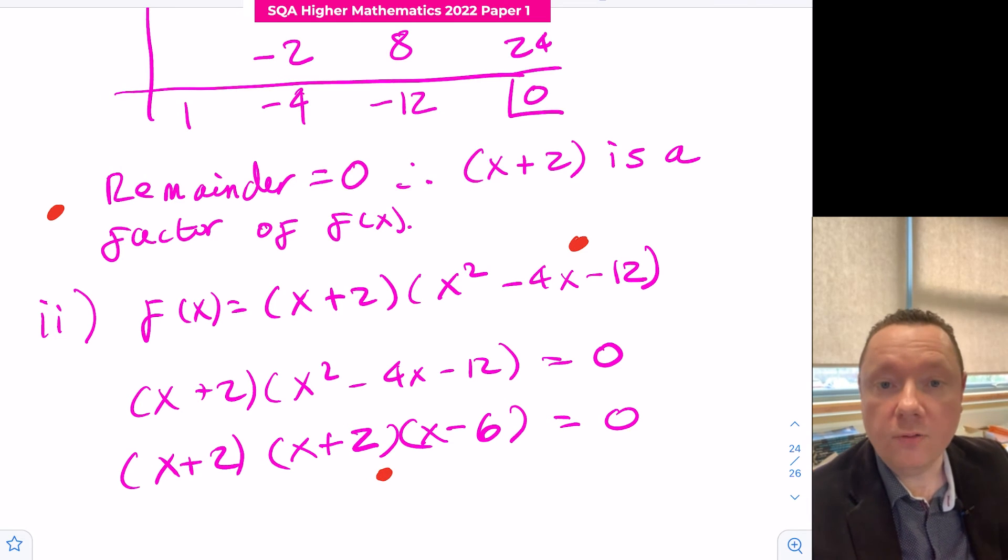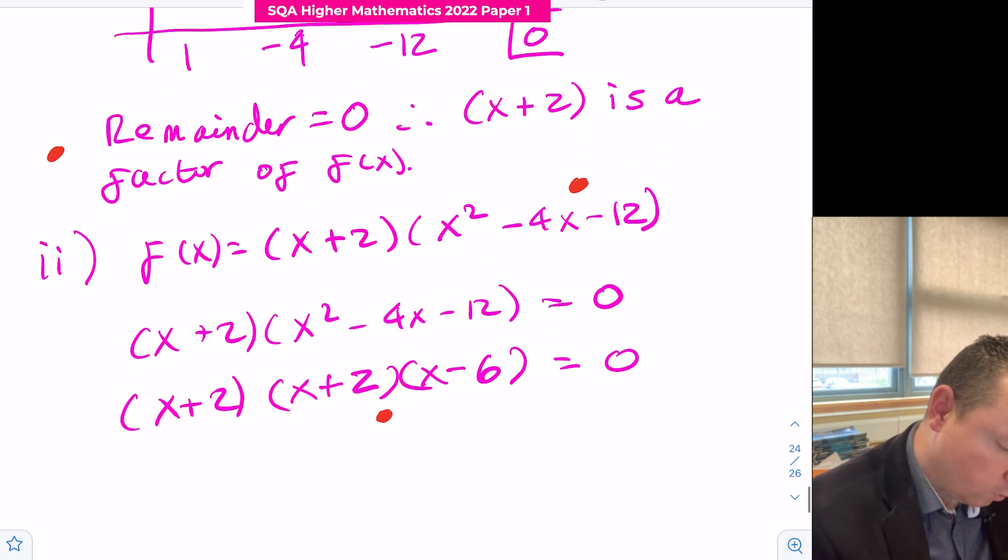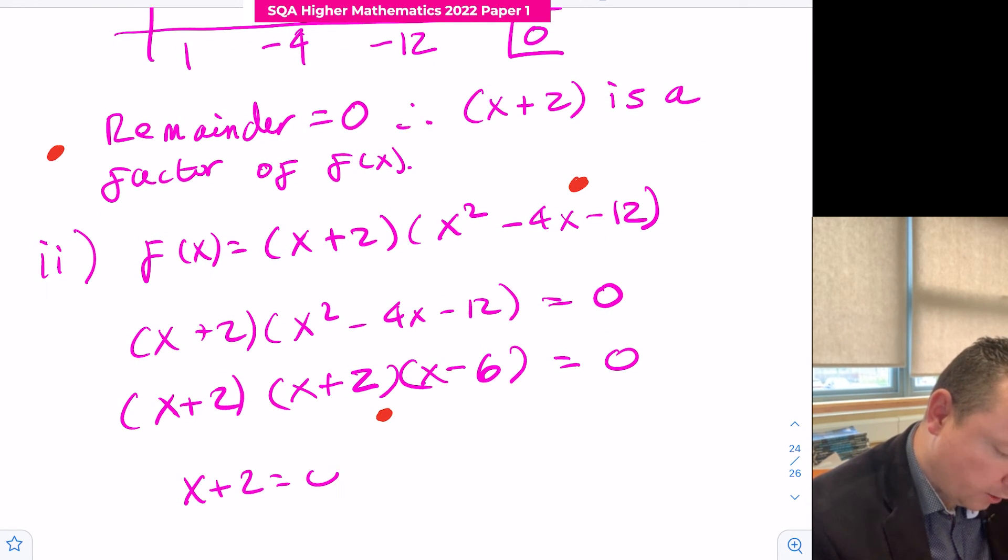Alternatively, if you forgot how to factorize, you could substitute into the quadratic formula correctly: 4 plus or minus the square root of minus 4 squared minus 4 times 1 times minus 12, all over 2 times 1. You would get a mark for that. Your final mark is for working that out. We've now got x plus 2 equals 0 or x plus 2 equals 0 or x minus 6 equals 0. So x equals minus 2 or x equals 6.